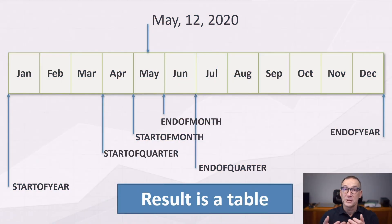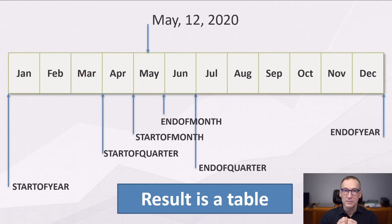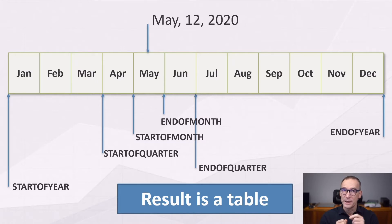DAX offers a set of time intelligence functions whose goal is to retrieve the beginning or the end of a given period. All these functions read the content of the filter context and then they return a table containing only one date. This date is either the beginning or the end of the current selection.